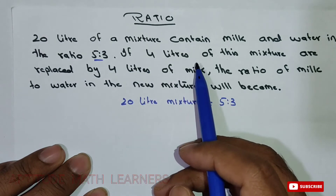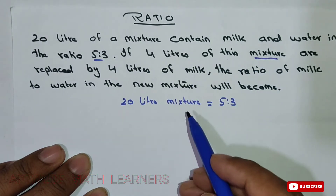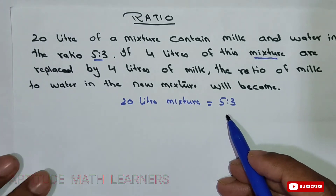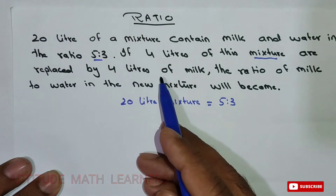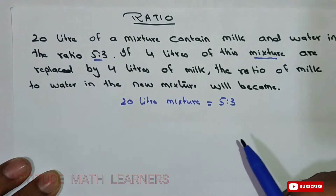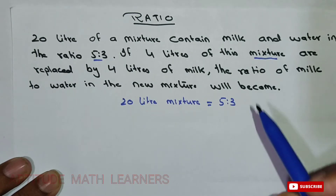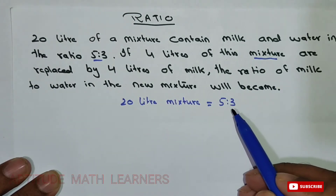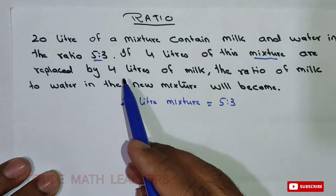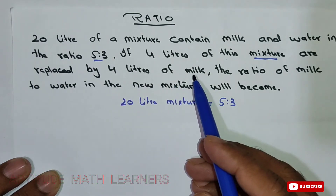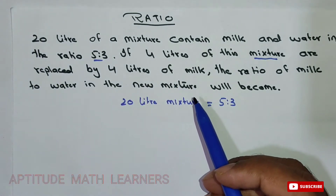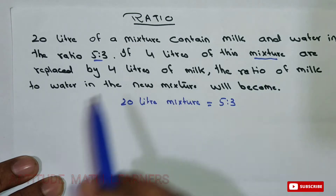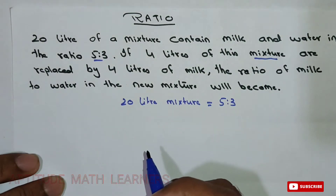The key point to notice is that 4 litres of this mixture — meaning from the whole mixture of milk and water — are replaced by 4 litres of milk only. This is the main point you have to understand: if 4 litres of this mixture are replaced, the first thing we have to do is take out 4 litres from the whole mixture.